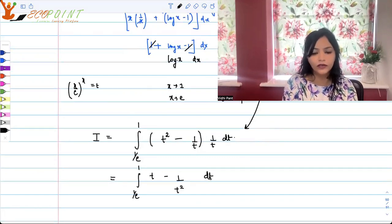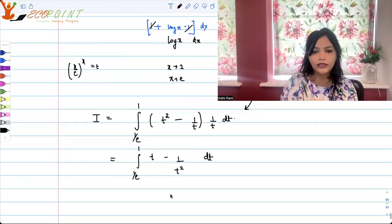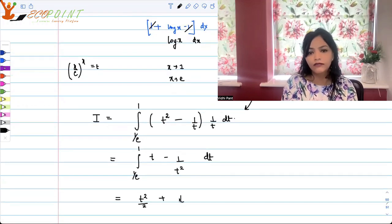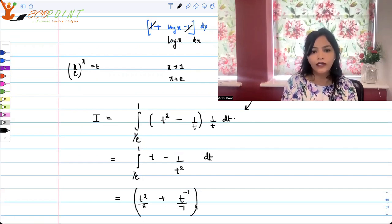Or in other words, what you can just do is take this as the power minus 2, basically. And you can integrate now. Now it's just going to be t square upon 2 plus minus 2 plus 1 gives you minus 1, upon minus 1. And the bounds are 1 by e to 1. So let's just put in the bounds now.